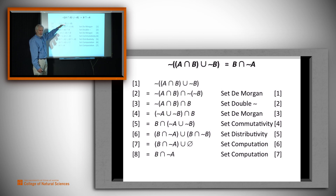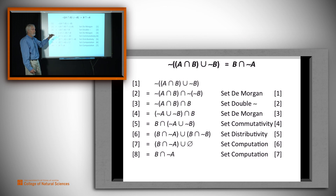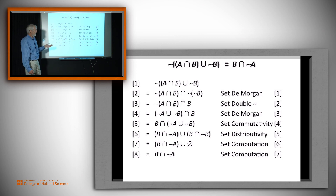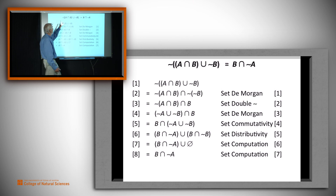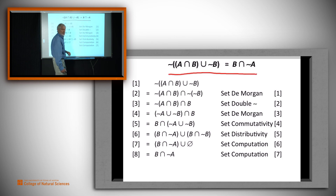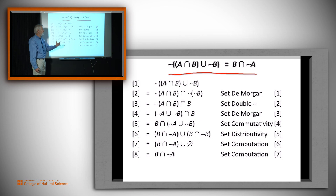We weren't forced to prove it this way — we could have used translation from set definitions into logic, done some logic, and translated back into set definitions, but it would have taken a great deal more work. This shows you the benefit of knowing set identities. Also, what we've just established here is a new set identity, namely that these two forms are equal, and therefore on a subsequent proof we might want to use it as a set identity.